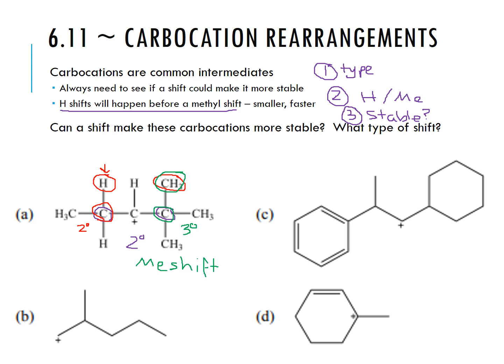In part B, we have a primary carbocation. Looking at the neighbors, there is a hydrogen on one carbon. If we shift that hydrogen over, the carbocation will then be tertiary — it becomes more stable. So this one goes through a hydride shift.